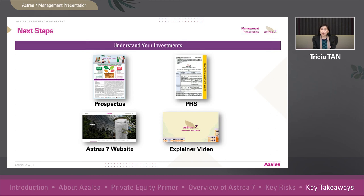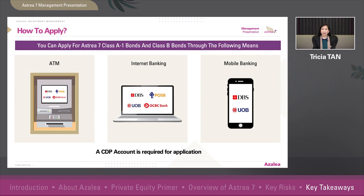You may also watch our illustrated explainer videos, which are also available on our website. You can apply for the Astra 7 Class A1 bonds and/or Class B bonds through the following means as shown on the screen.